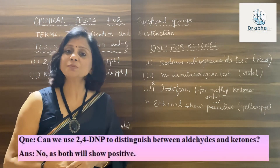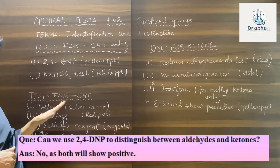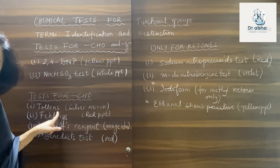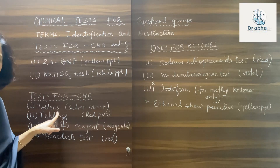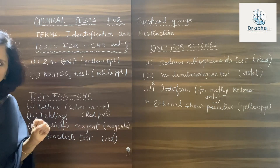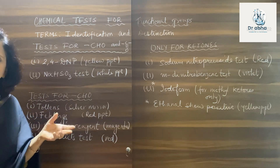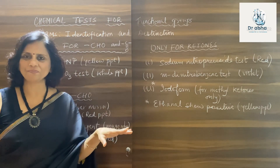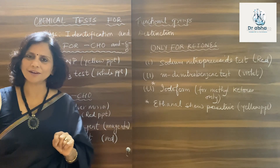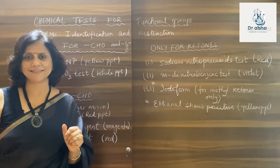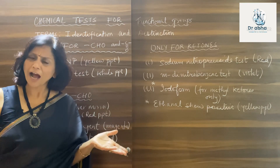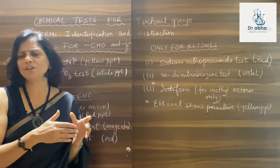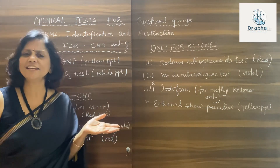Moving on to more specific tests for aldehydes: Tollens test, also called the silver mirror test, gives a precipitate of silver. Tollens test is given by all aldehydes — aliphatic as well as aromatic. It is not shown by ketones, not by acids, and not by alcohols. So we can use it as a specific test for aldehydes and to distinguish aldehydes from any other class of compound.